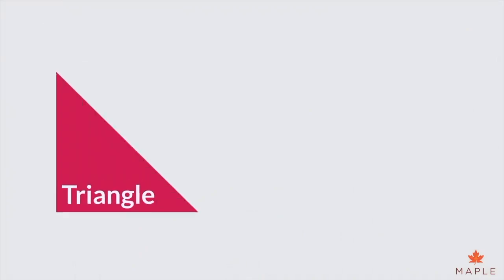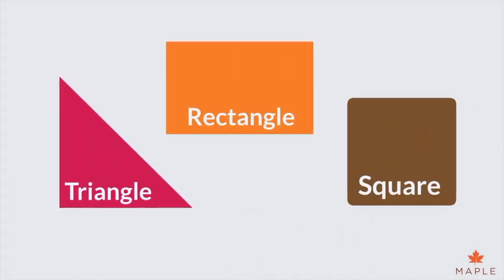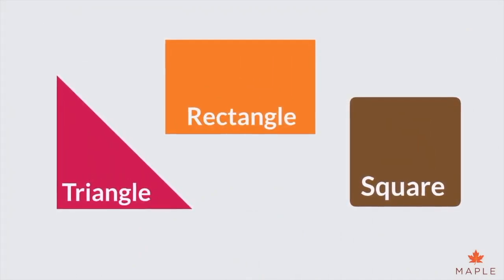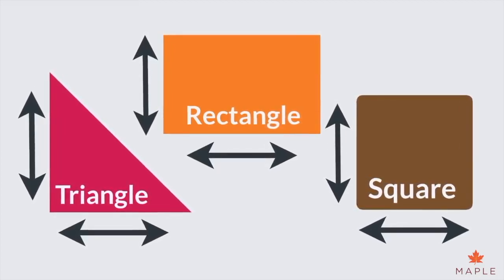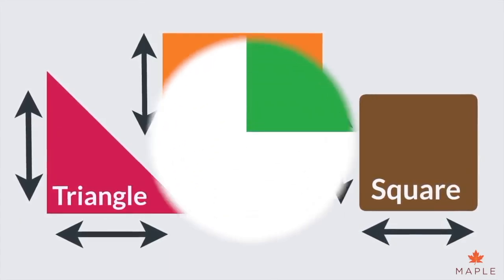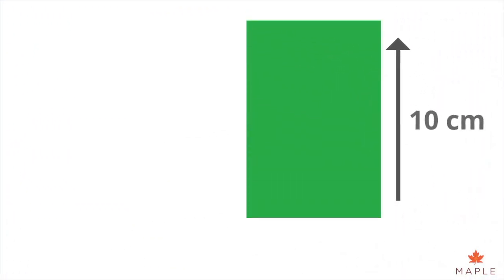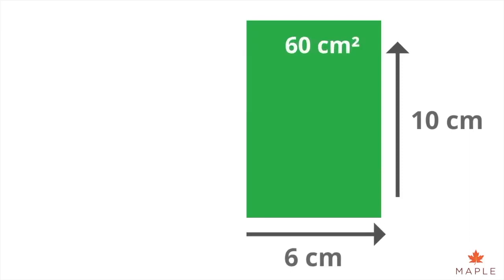It's also handy to know that any triangle is half the area of a rectangle or square with the same height and width. For example, a rectangle with a height of 10 centimeters and a width of 6 centimeters has an area of 60 centimeters squared.